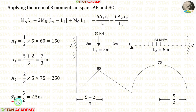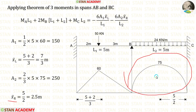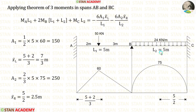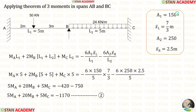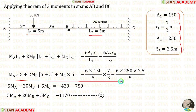Now let us calculate x-bar right. This is a symmetrical diagram, so the centroid lies in the center. When we divide the length 5 by 2, we get x-bar right equal to 2.5 meters. Now let us apply the values in this equation. We have already calculated area 1, x-bar left, area 2, and x-bar right. L1 is equal to 5 meters and L2 is equal to 5 meters. Finally, we are making the second equation.